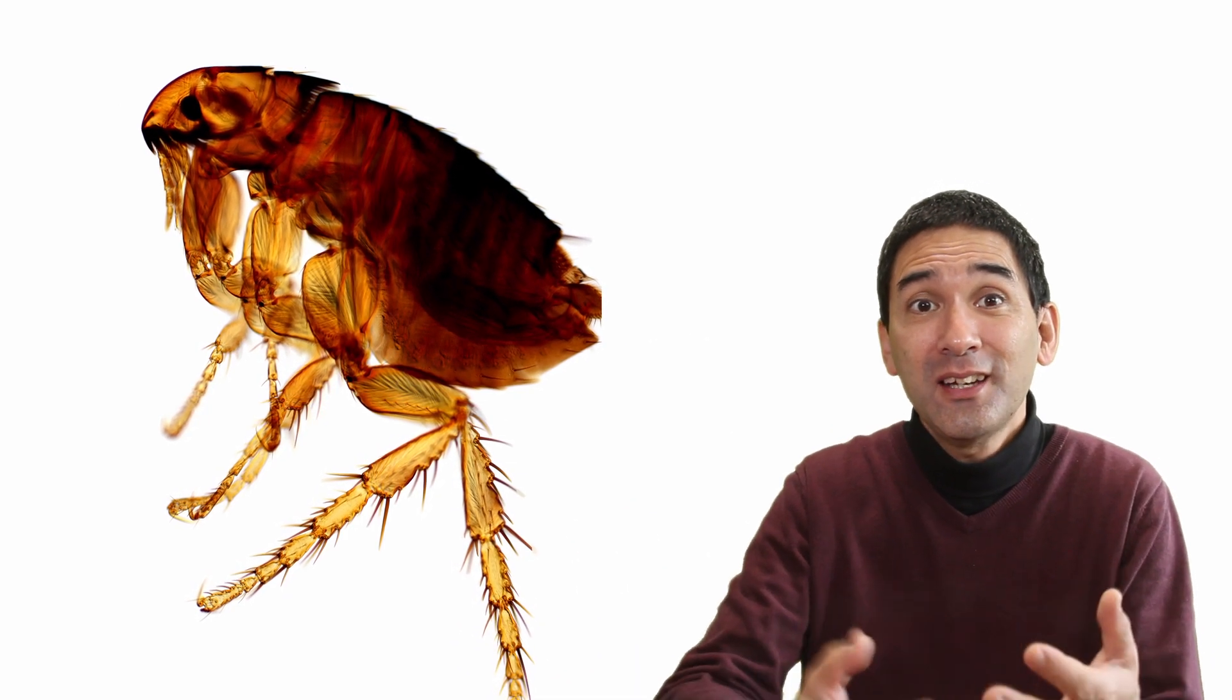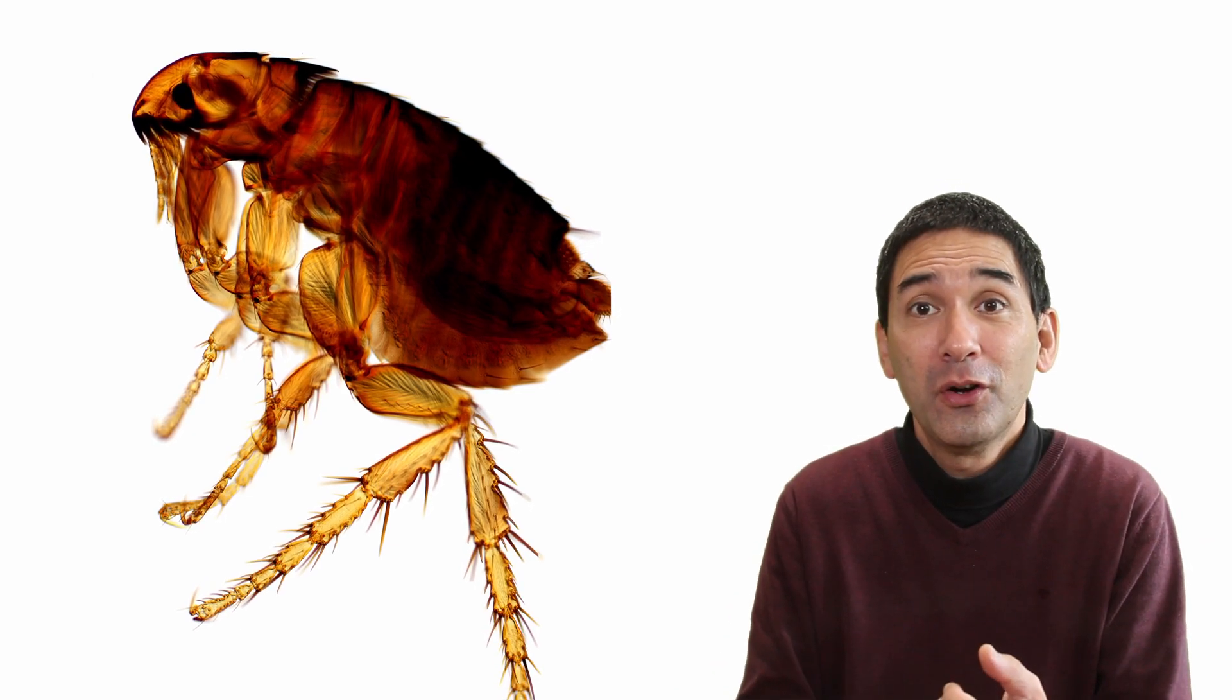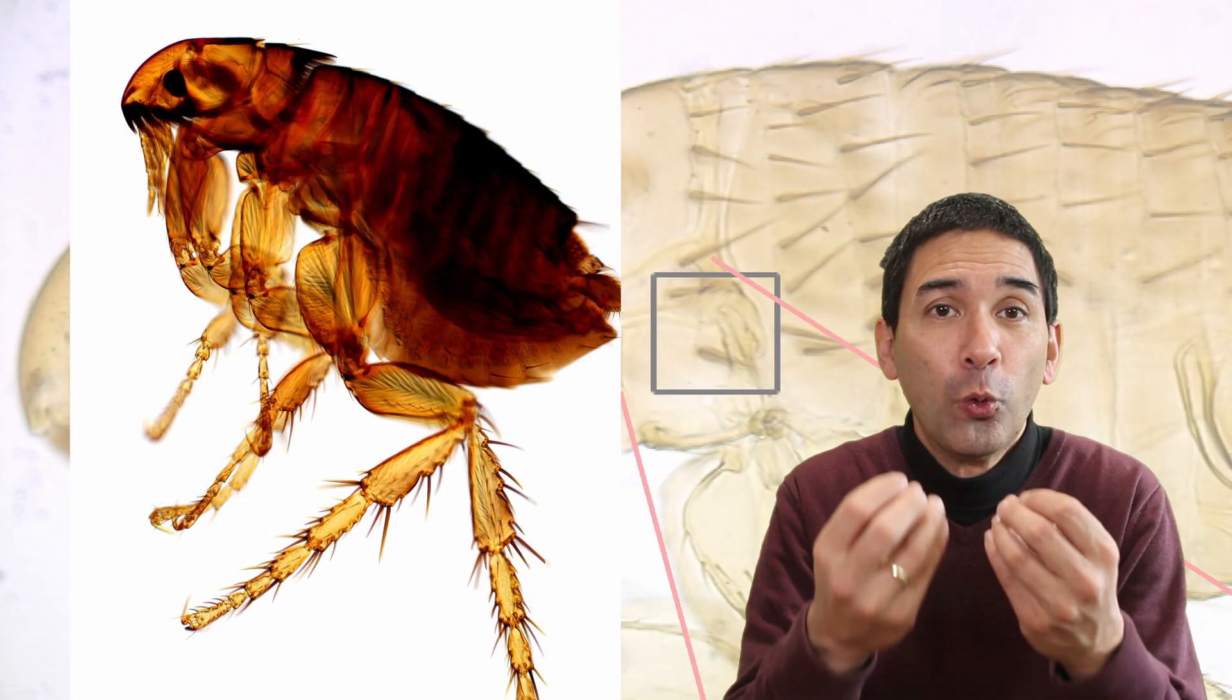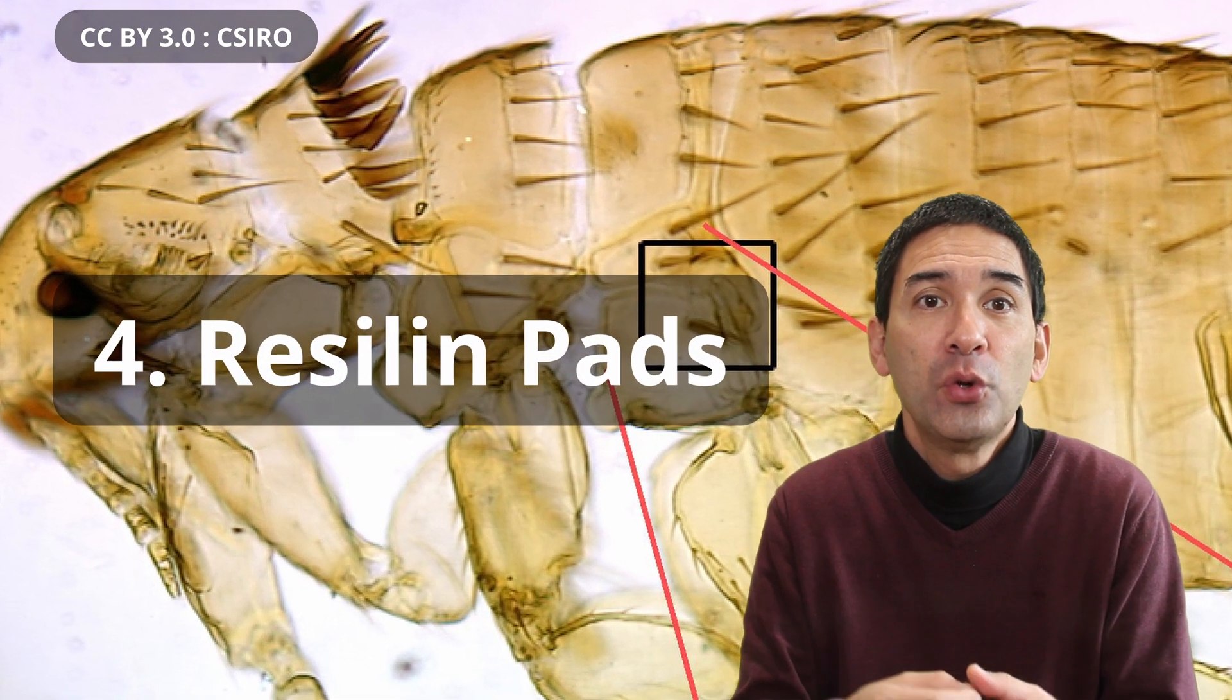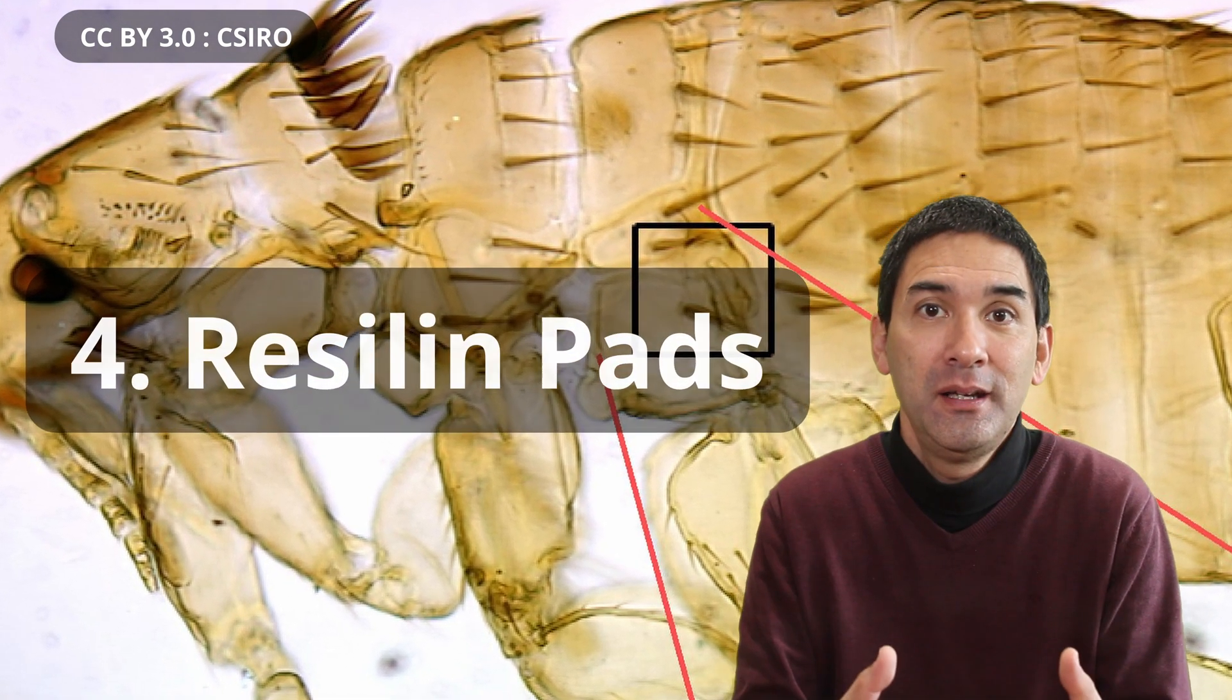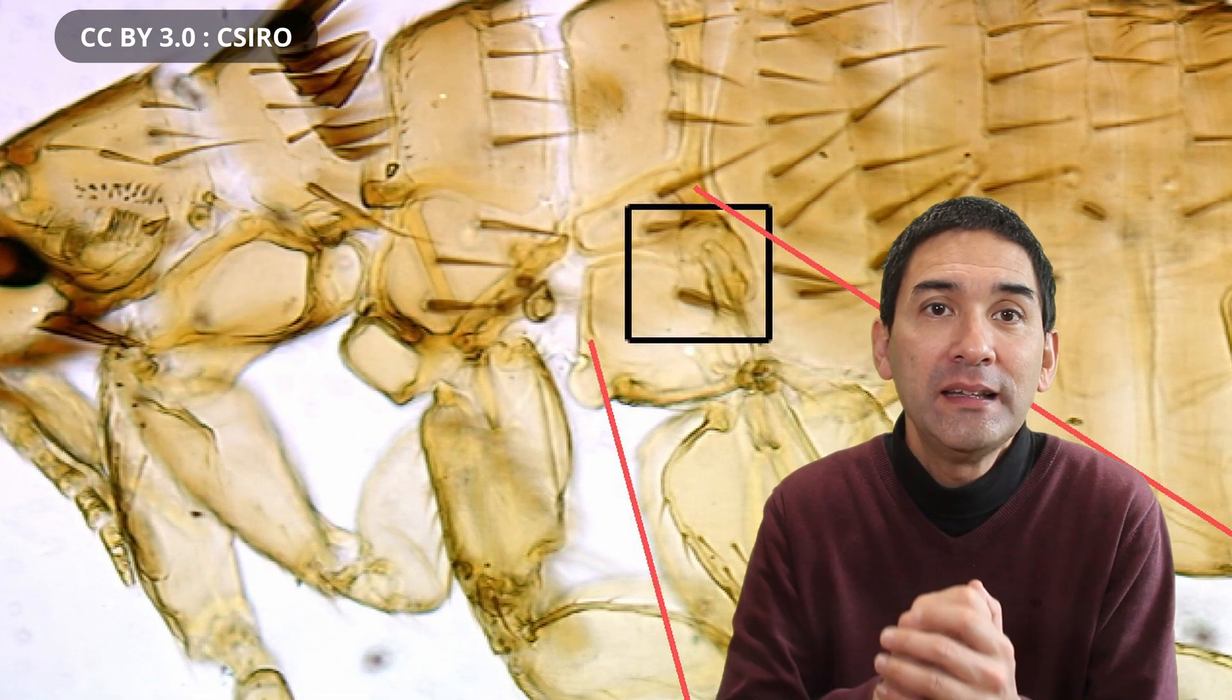This actually leads us now to the second reason why fleas are able to jump so far. They have a specific organ that is used for jumping. This organ is also known as the Resilin Pad. It can be found at the top of the hind leg.